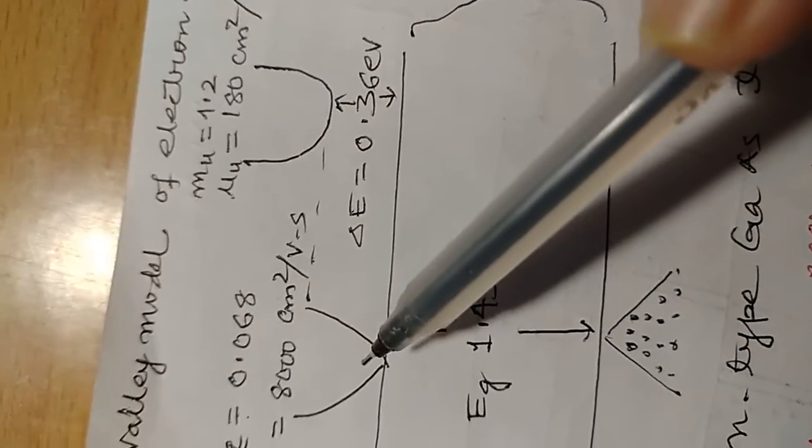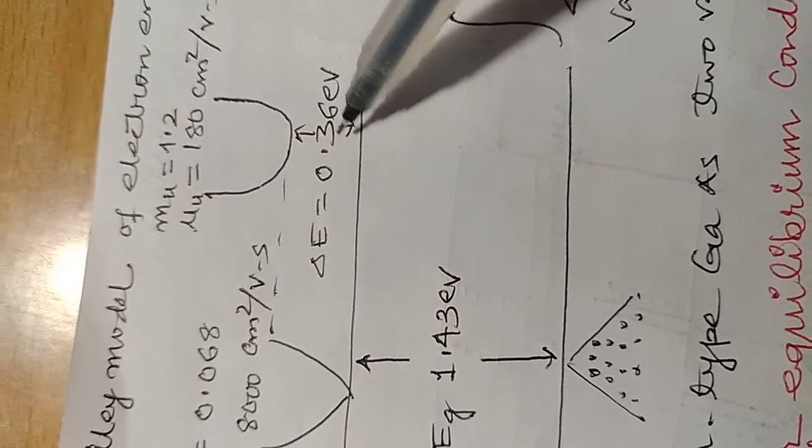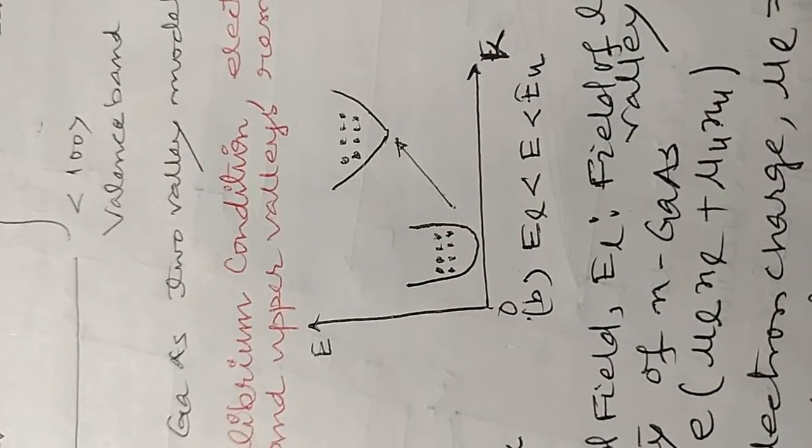The basic energy level difference between the upper valley and lower valley is 0.36 electron volts. This is the requirement and this is the energy transferring of the electrons from lower valley to upper valley.